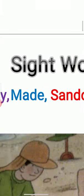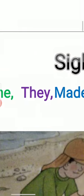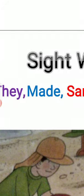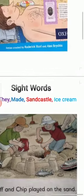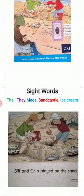We are going to revise the sight words one more time: the, they, made, sandcastle, ice cream. And one more time — first word is 'the', then 'they', after that 'made', next word is 'sandcastle', and the last word is 'ice cream'.